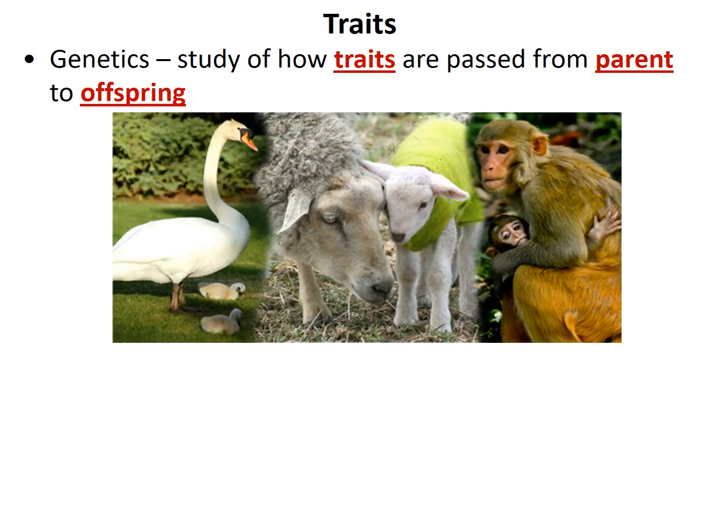Let's start off with this idea of traits. Genetics is really the study of how traits like eye color or blood type are going to be passed from parents to offspring. We've always noticed that offspring look a lot like parents, so the question was why is that? How are those traits being passed on, and what determines which traits get passed on and which ones don't?